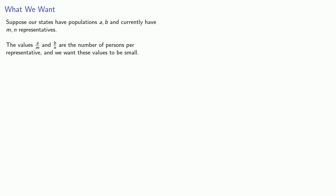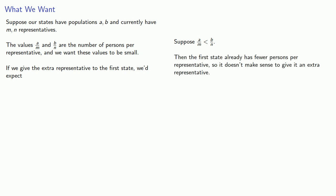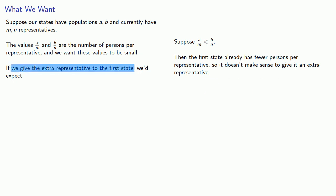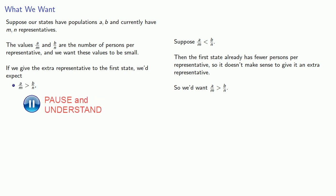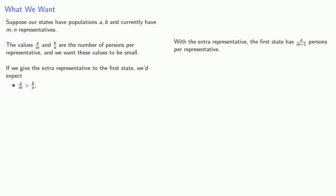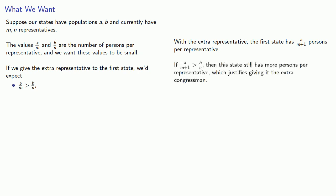If we give the extra representative to the first state, we'd expect a few things. If A/M is less than B/N, that means the first state already has fewer persons per representative, so it doesn't actually make sense to give it an extra representative. Since we are giving the extra representative to the first state, we'd want A/M to be larger than B/N. With that extra representative, the first state now has A/(M+1) persons per representative, and if this inequality still holds, the state still has more persons per representative, which justifies giving them the extra congressman.